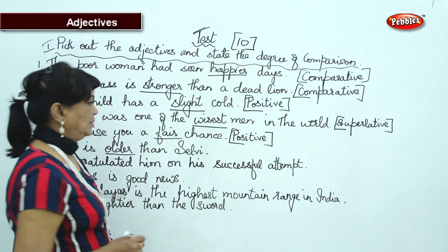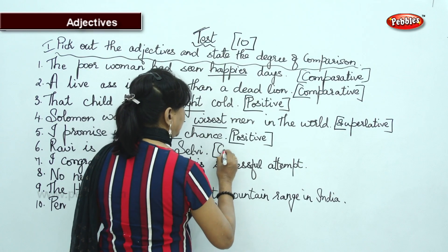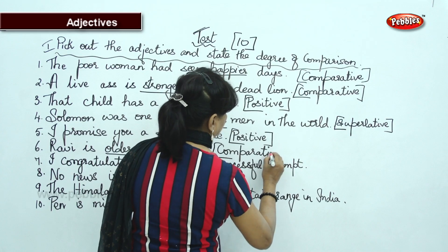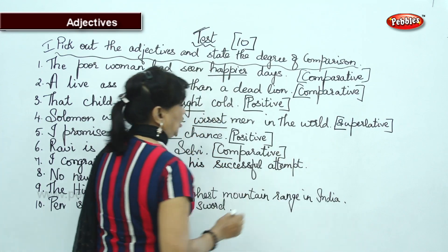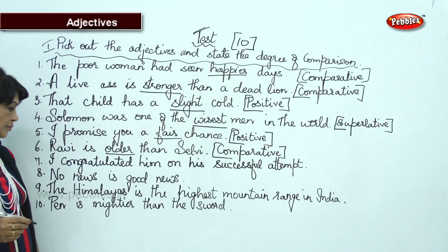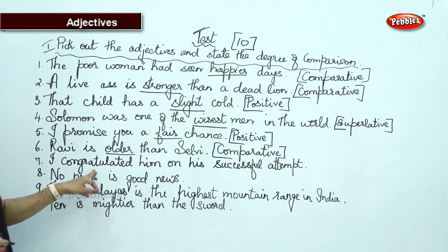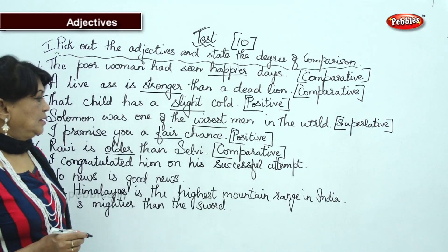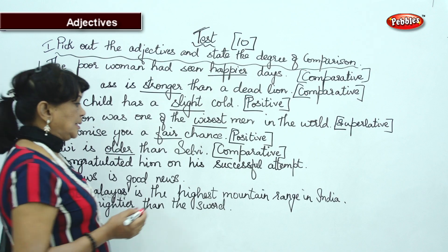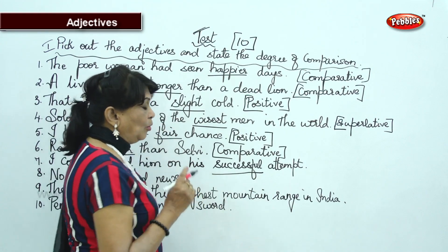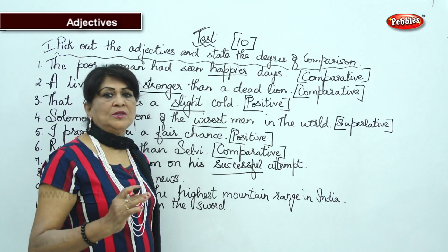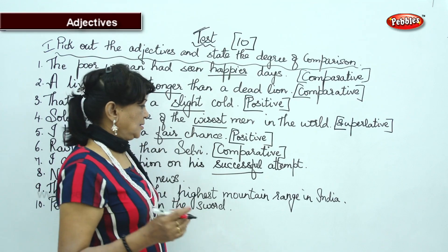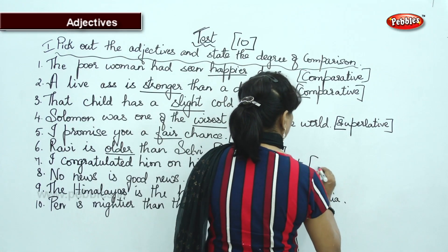Next one: 'Ravi is older than Selvi.' Older has -ER, so it is comparative. Old, older, oldest. 'I congratulated him on his successful attempt.' What sort of attempt? Successful attempt. Successful, more successful, most successful — so this is positive degree.